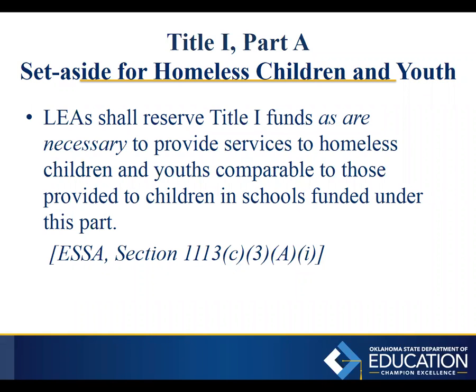Another flexibility under Title 1 Part A refers to the set aside for homeless children and youth. LEAs have the flexibility to reserve Title 1 Part A funds as are necessary to provide services to homeless children and youth comparable to those provided to children in schools funded under this part. Previously, LEAs had to reserve 1%, but now the amount is more flexible — you reserve funds as necessary. However, you must maintain a comparable per-pupil allocation relative to regular students in Title 1 schools, so there cannot be a very large discrepancy.